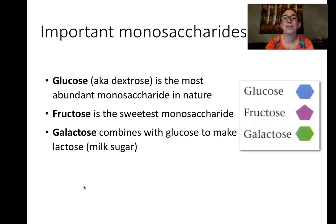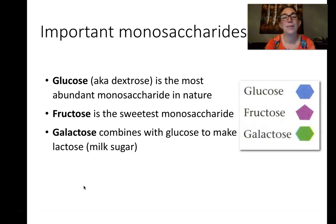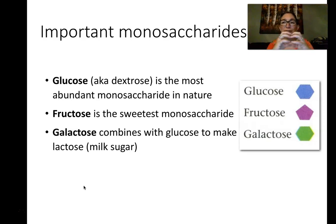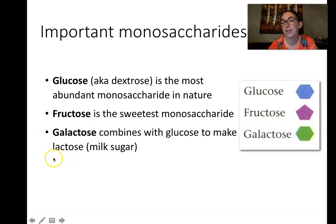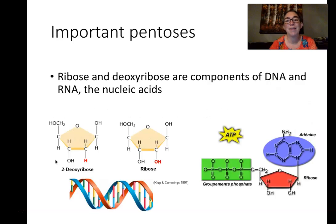Galactose is not typically found as a monosaccharide in nature. It's found as part of a disaccharide that we commonly ingest — it's found as part of lactose, which is milk sugar. So glucose and galactose combine to make the disaccharide lactose. When we digest milk, we end up with galactose as a monosaccharide in our digestive system. These three — glucose, fructose, and galactose — are the three important monosaccharides, and they make up the three important disaccharides.